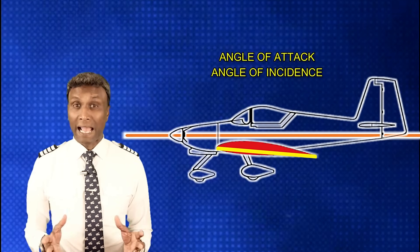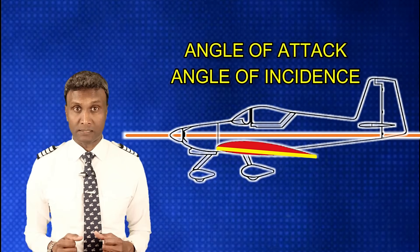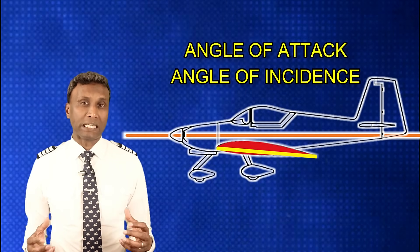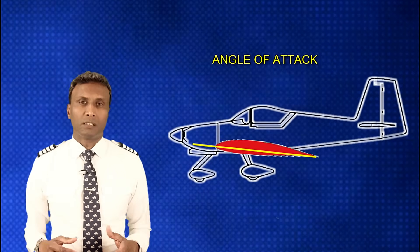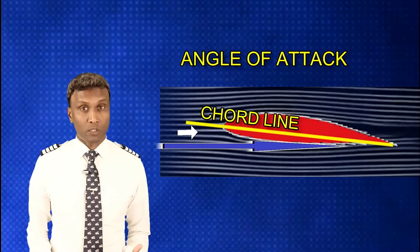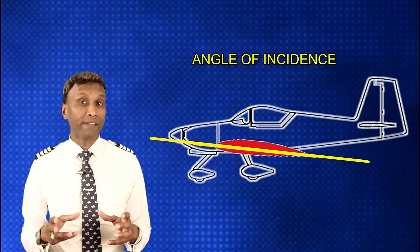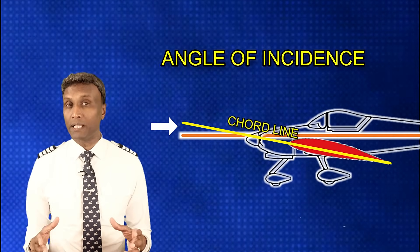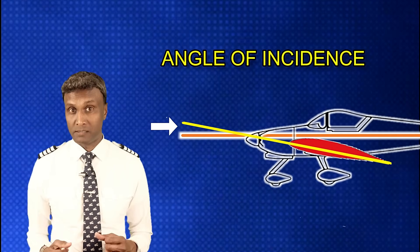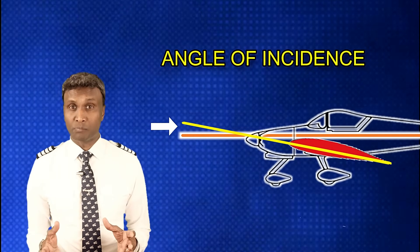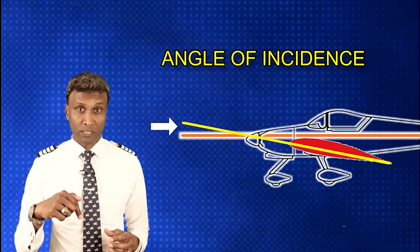Let's explore the angle of attack and angle of incidence — essential concepts in understanding how the aerofoil interacts with the air. The angle of attack is the angle between the chord line and the relative wind. Meanwhile, the angle of incidence is the angle formed by the wing's chord line and the aircraft's longitudinal axis. Discover more about the longitudinal axis by watching our video on aircraft axes — the link is available in the description below.